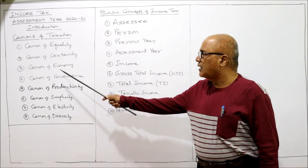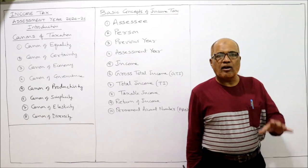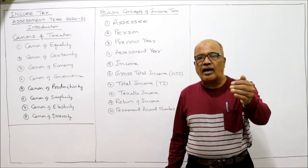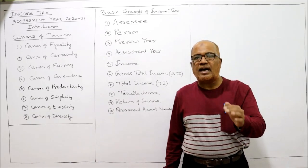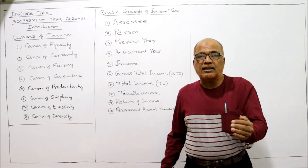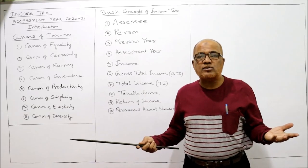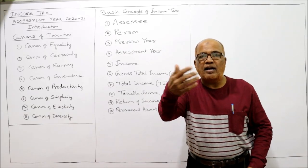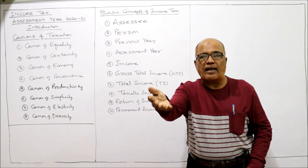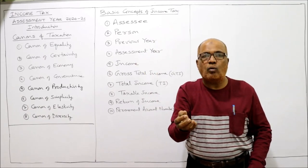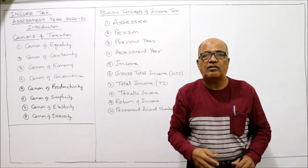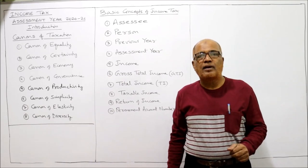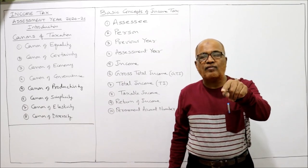The canon of economy says the expenditure incurred on collecting the tax should be minimum. For example, if the government spends 100 rupees to collect tax but collects only 50 rupees in revenue, there is no purpose. The cost of collection should be minimum — taxes should be economical.